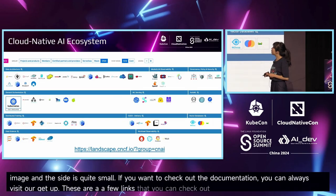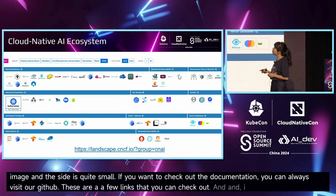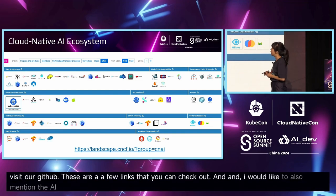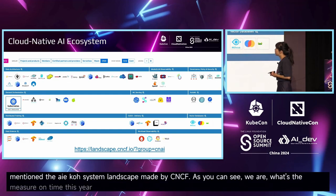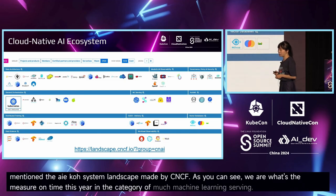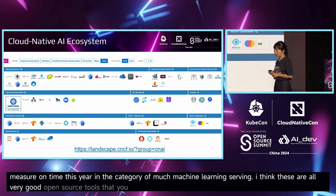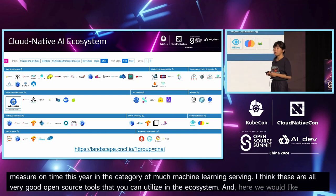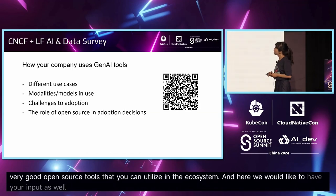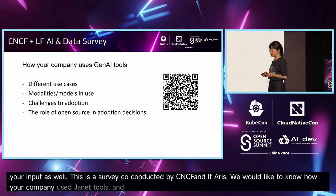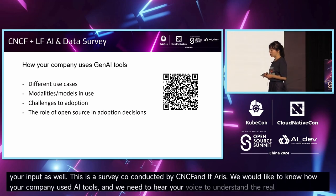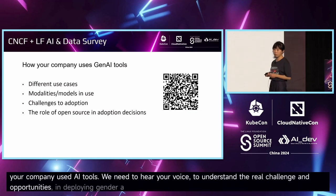I'd also like to mention the AI ecosystem landscape made by CNCF. We are listed as a WASM runtime this year in the category of machine learning serving. These are all very good open-source tools in this ecosystem. We'd also like your input: there's a survey co-conducted by CNCF and LF Research to understand how your company uses generative AI tools and the real challenges and opportunities in deploying gen AI in the cloud. Your input matters.